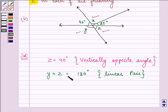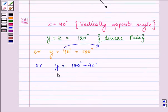We already have the value of z as 40. So we have y plus 40 degrees equal to 180 degrees. Or, we have y as 180 degrees minus 40, when 40 is taken from left-hand side to right-hand side. And we have y as 140 degrees.